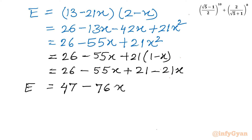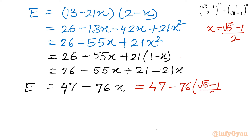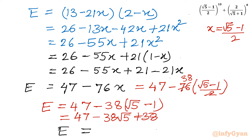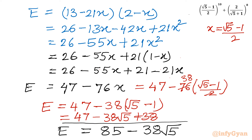Now I will put the value of x, which was (√5 - 1)/2. Substituting: 47 - 76 × (√5 - 1)/2 = 47 - 38(√5 - 1). Expanding: 47 - 38√5 + 38. Adding: 47 + 38 = 85. So the final and correct answer is 85 - 38√5.